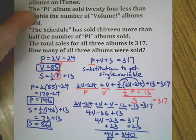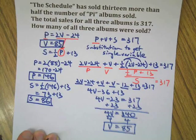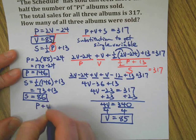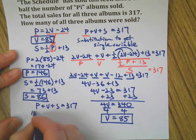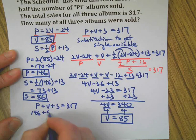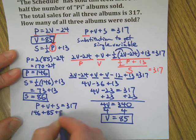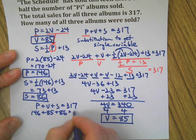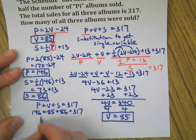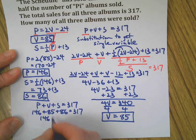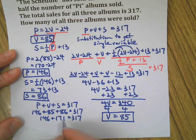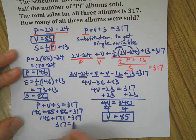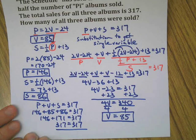We're about out of room, but we have a chance to test this out, because the three albums together should equal 317. Pi plus Volume plus Schedule—is this going to be true? Let's simplify a little bit and then use the calculator. Always check. This is true. So those are the correct answers: 85 Volume, 146 Pi, 86 Schedule.